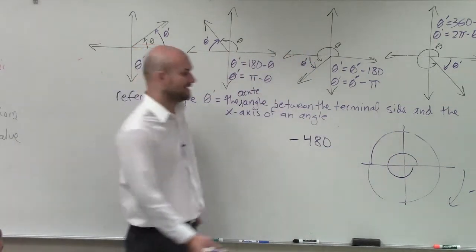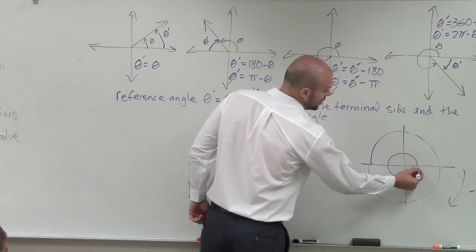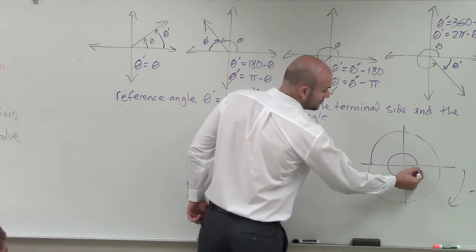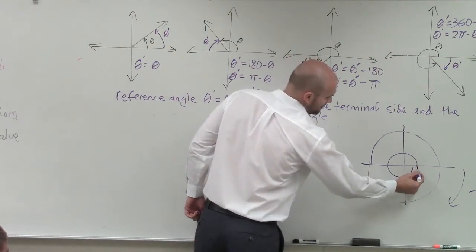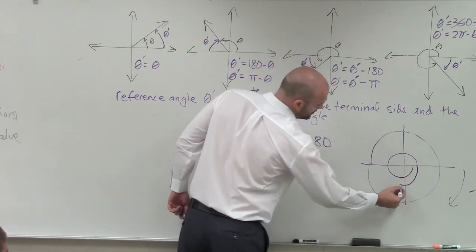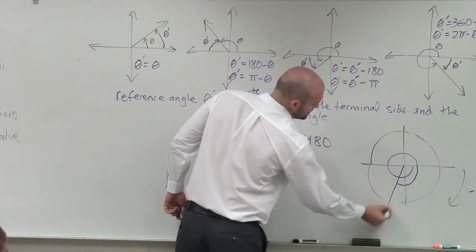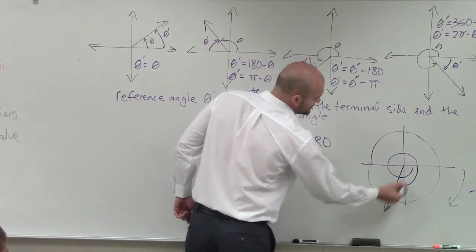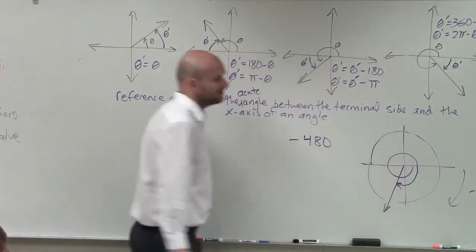And then to get to negative 480, I need to do another negative 120 — from 360 to 480, that's 120. So that would be my terminal angle.